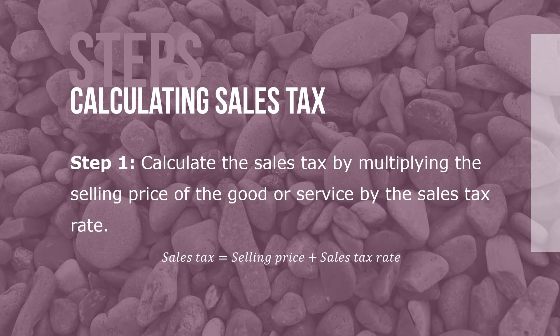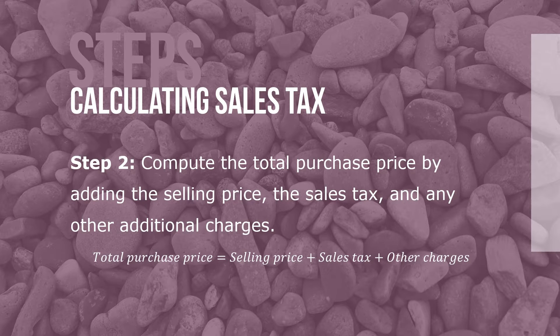Here are the steps to calculate sales tax and total purchase price using the percent method. Step 1: Calculate the sales tax by multiplying the selling price of the good or service by the sales tax rate, where sales tax equals selling price times sales tax rate. Step 2: Compute the total purchase price by adding the selling price, the sales tax and any other additional charges, where total purchase price equals selling price plus sales tax plus other charges.